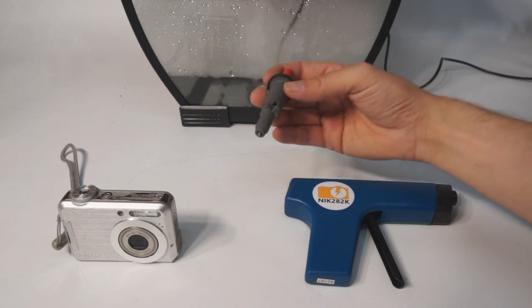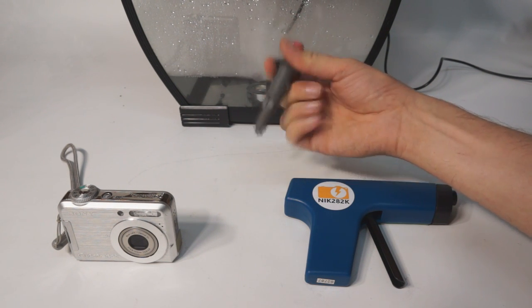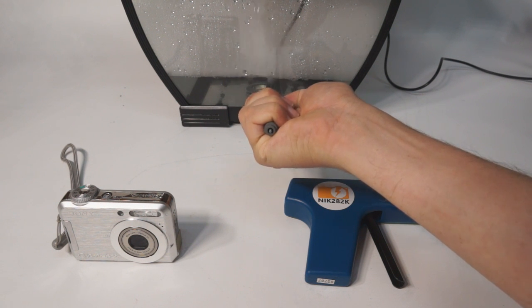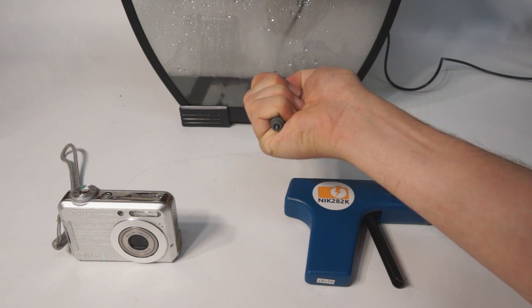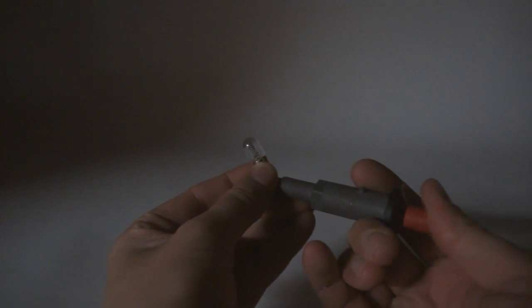In the barbecue igniter, the piezoelectric element is being hammered on by a steel mass being driven by a spring. This causes a large voltage to develop across the piezoelectric element, which causes a spark used to ignite the gas in a barbecue.